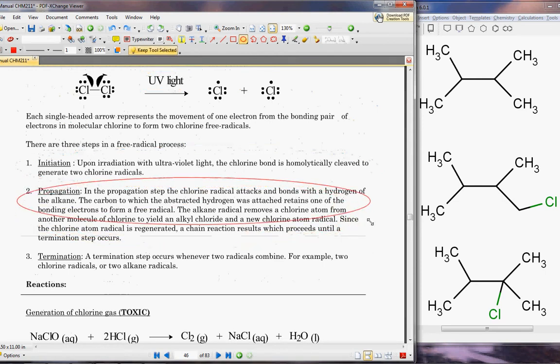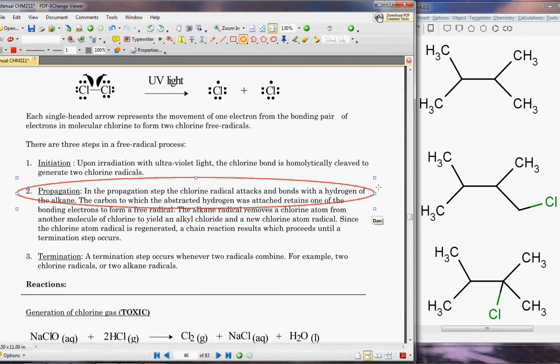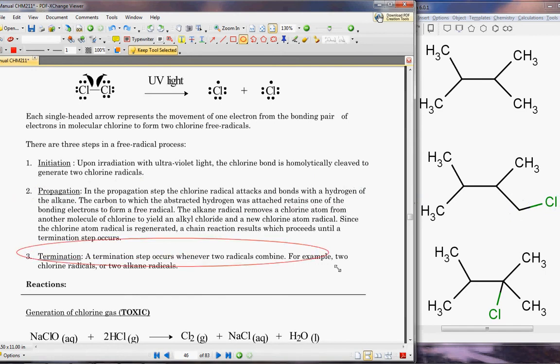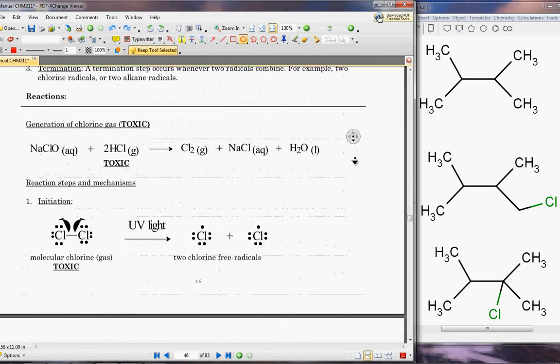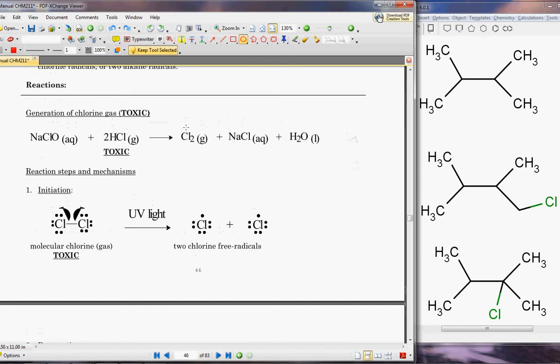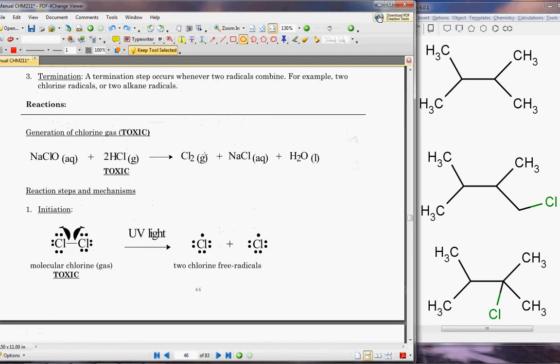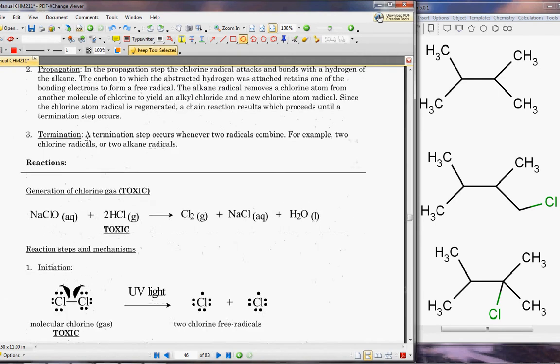You need to initiate the reaction. Essentially you've got chlorine, but it's stable. That's why, for example, up here we've got UV light as our initiation step. Then you've got the propagation step where the chlorine radicals attack and bond with the hydrogen of the alkane. Finally there's termination, which occurs whenever two free radicals combine.